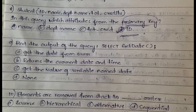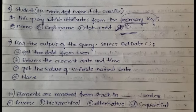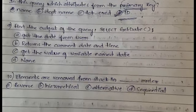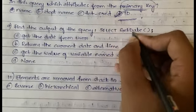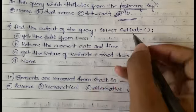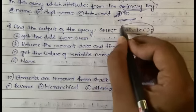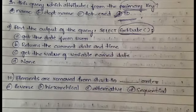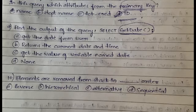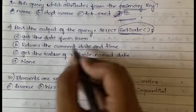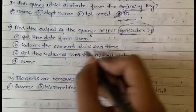Find the output of this query: SELECT GETDATE(). What is the output of this? The GETDATE function is used to retrieve the current date and time of the system. It returns the current date and time, so option B is correct.